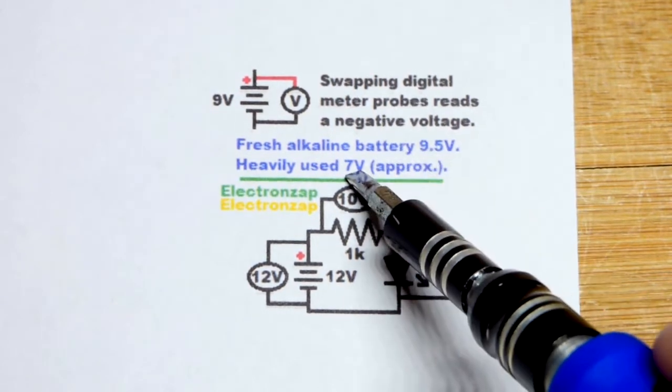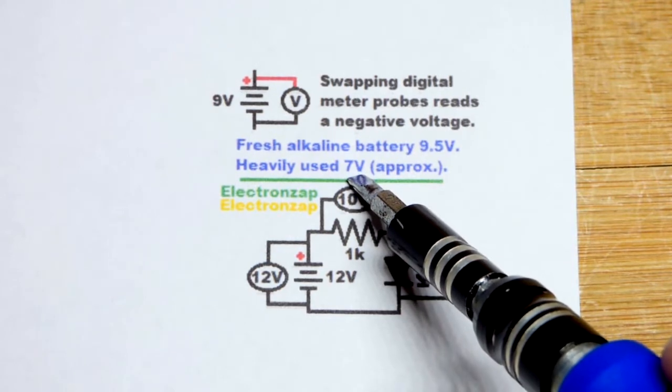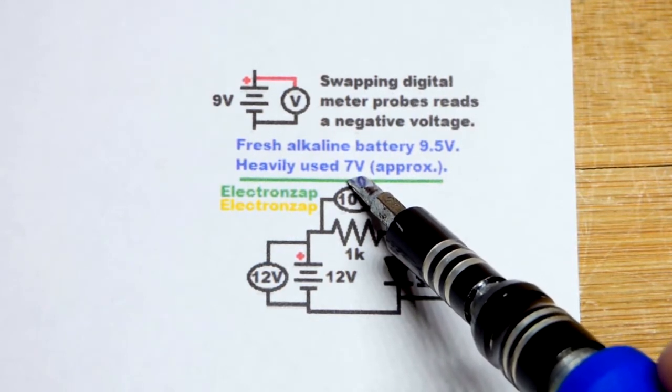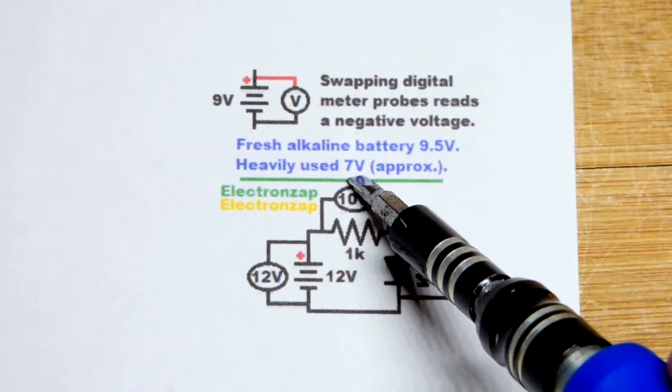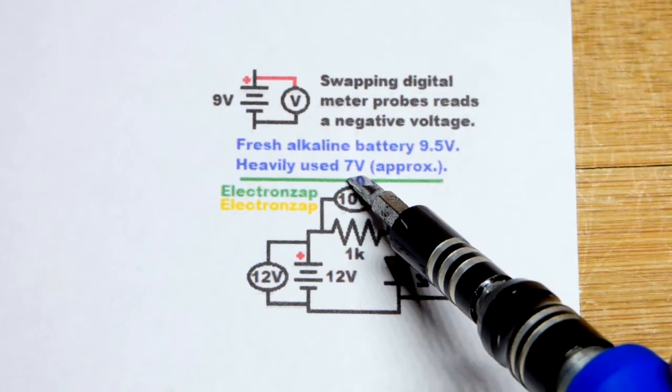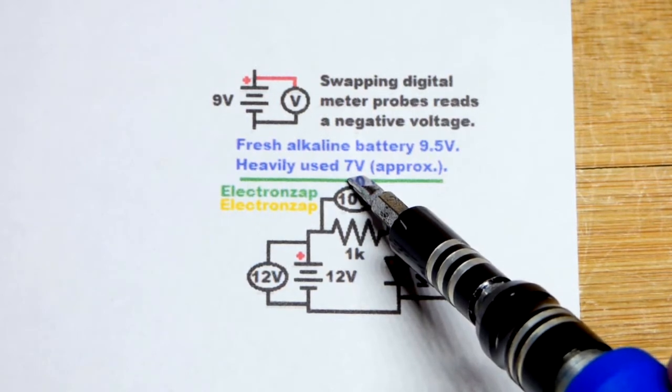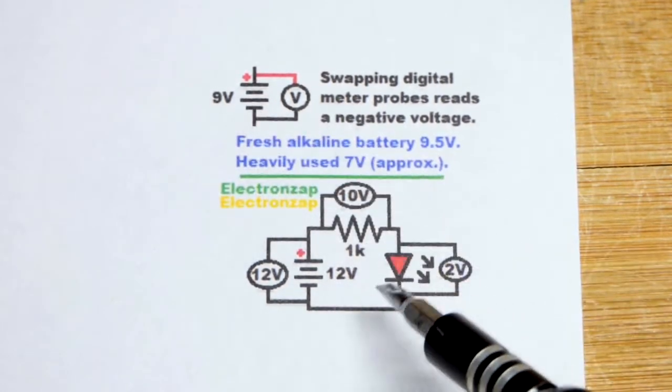When you use them over time the voltage goes down and if you used it quite a bit it's probably going to get to about 7 volts or so. That may be when you want to replace it. Maybe you can still use it a little bit longer depending on your circuit but in any case the voltage goes down over time. So you can see how charged it is by its voltage.